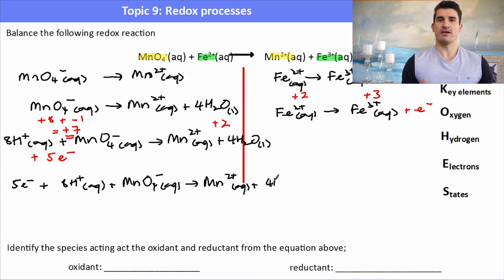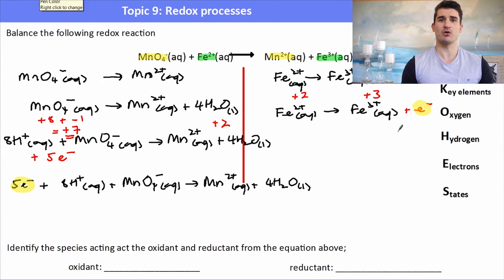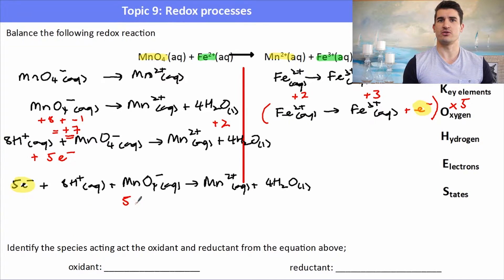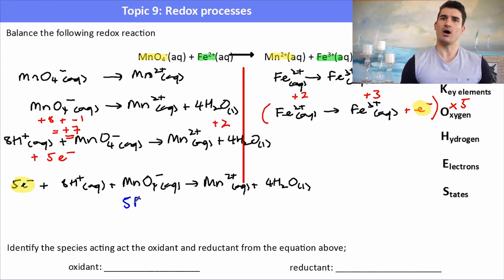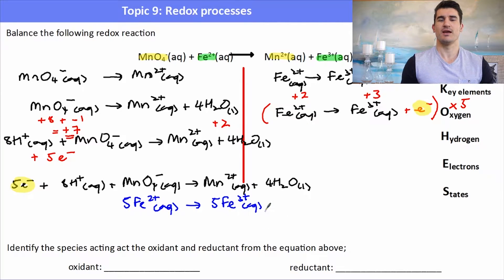Now to balance the overall redox reaction I need to balance for electrons. In the reduction process we have 5 electrons being gained, but in the oxidation process only 1 is being lost. So I multiply the oxidation reaction by 5. After doing that, I keep everything on the left-hand side on the left, everything on the right-hand side on the right. We now have 5 Fe2+ going to 5 Fe3+ plus 5 electrons, and the permanganate half equation remains unchanged.